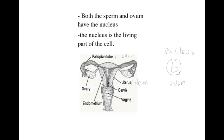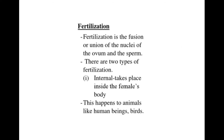We also have the fallopian tube, also called the oviduct. The ovary is the one that produces the ovum in the female reproductive organ. It is important to note that both the sperm and the ovum have a nucleus — the living part of the cell, which is the part that carries life. For reproduction to occur, a process called fertilization has to take place. Fertilization is the union or fusion of the nuclei of the ovum and the sperm.